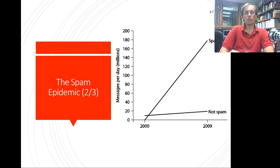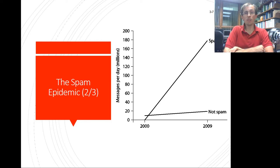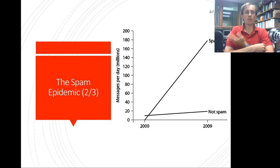Legitimate email roughly doubled, and spam growth skewed the graph significantly. Today it's around 14.5 billion messages. By comparison, a physical mailing campaign to 1 million contacts costs $440,000 for the mailing list, $280,000 for postage at bulk rate, plus materials — making it obvious why electronic mail is preferred even with abysmally low response rates.